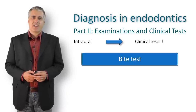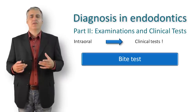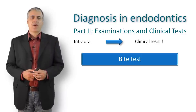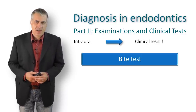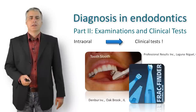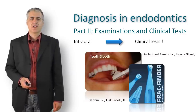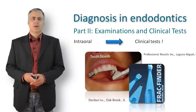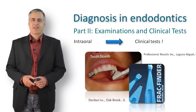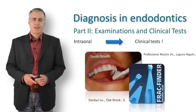The bite test can help identify this. While a periapical process will be reproducibly painful when tapping anywhere on the tooth, a cracked tooth or fractured cusp will produce a response only in a specific area. To test a single cusp, the practitioner needs a tool that applies pressure only to that area — commercially available devices for the bite test include the Tooth Slooth and the Frac Finder.